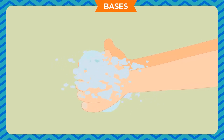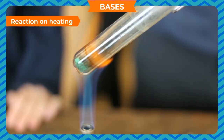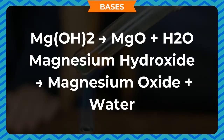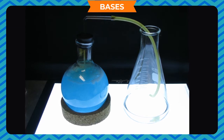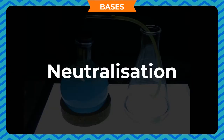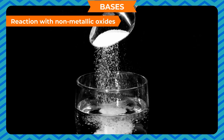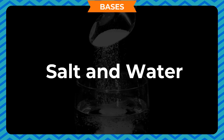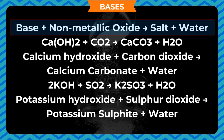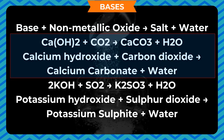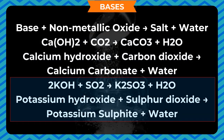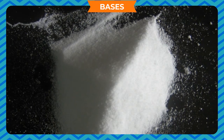Chemical properties of bases — reaction on heating: on heating, some bases lose their water to form corresponding oxides. For example: magnesium hydroxide → magnesium oxide + water. Reaction with acids: bases form salt and water — this is called neutralization. Acid + base → salt + water. HCl + NaOH → NaCl + water. Reaction with non-metallic oxides: base + non-metallic oxide → salt + water. Ca(OH)2 + CO2 → CaCO3 + water; KOH + SO2 → potassium sulfite + water.